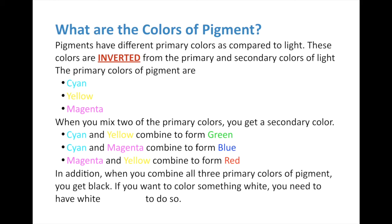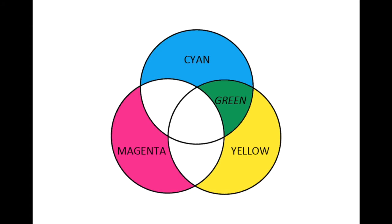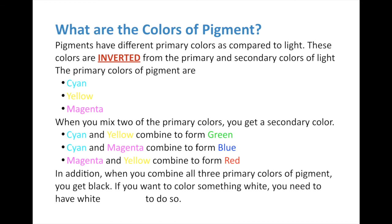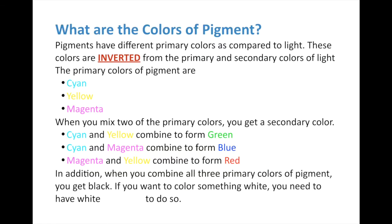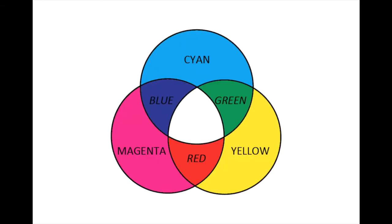Let's mix some pigment colors to get secondary colors. First, whenever you mix cyan and yellow, you get green - you can see it's a bit darker than green in colors of light. Cyan and magenta make blue - that's the pigment color of blue. And magenta and yellow combine to form red. So: cyan and yellow form green, magenta and cyan form blue, and magenta and yellow form red.